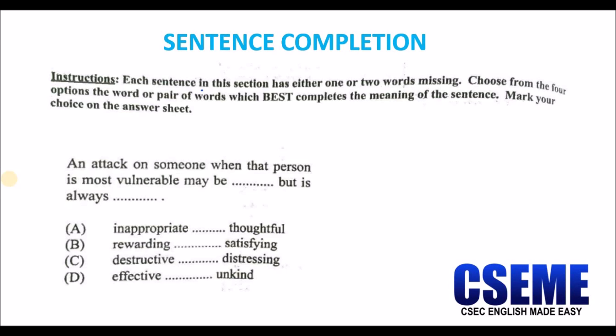Let's look at the second question: 'An attack on someone when that person is most vulnerable may be ___, but it is always ___.' The options are: A. inappropriate / thoughtful, B. rewarding / satisfying, C. destructive / distressing, D. effective / unkind. As always, it is good to read the sentence and substitute the options so you can see which best completes the sentence.